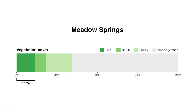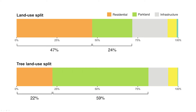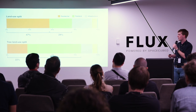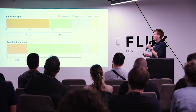Now take a look at Meadow Springs. Here we have 11 percent tree canopy — that's half what we had in Nedlands. If we look at the land uses, it's 47 percent residential — somewhat similar — and a slightly larger 24 percent parkland. But take a look at how that tree canopy is distributed: despite residential land accounting for nearly half of the suburb's area, it holds just a fifth of the tree canopy, whereas parkland, which made up nearly a quarter of the suburb's area, holds around 60 percent. We can conclude that tree canopy is not proportionally distributed by land use and is significantly underutilized on residential land. Suburbs like this, where tree canopy is concentrated away from the land uses that need it most, are more likely to experience exacerbated temperatures without the intervention of appropriate policy and urban greening measures.